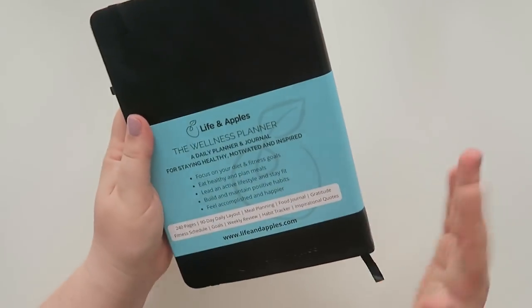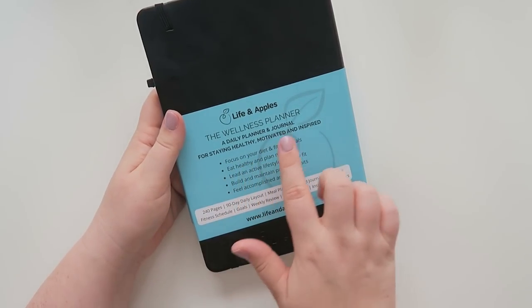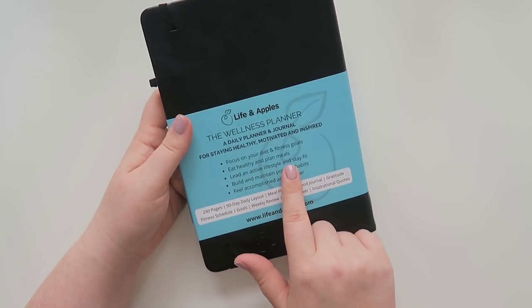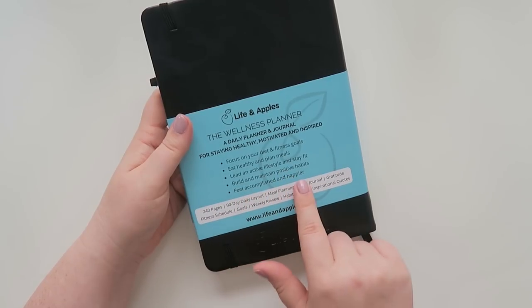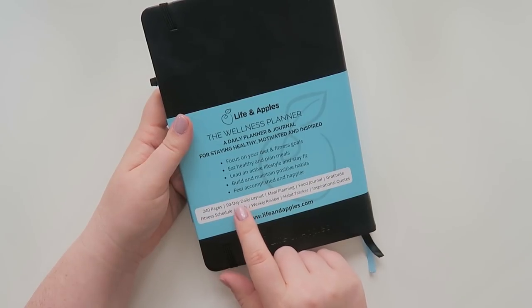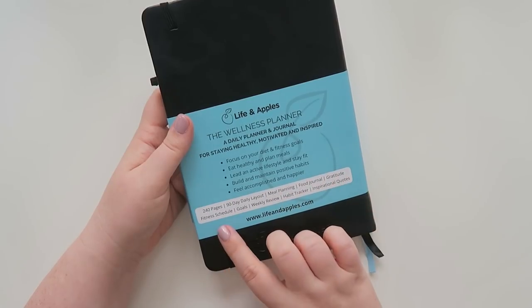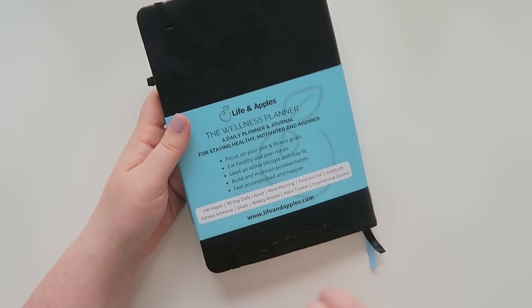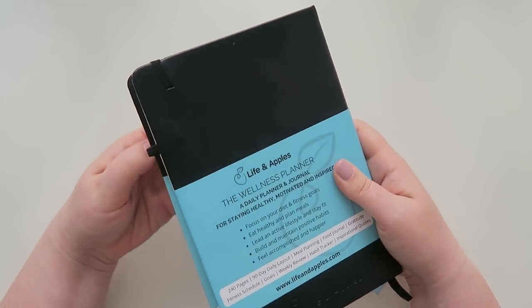And then there's some information on the back as well. So it says The Wellness Planner, a daily planner and journal for staying healthy, motivated, and inspired. It helps you focus on your diet and fitness goals, eat healthy and plan meals, lead an active lifestyle and stay fit, build and maintain positive habits, feel accomplished and happier. And then down here it has 240 pages. It's a 90-day layout, 90-day daily layout. There's meal planning, food journal, gratitude, fitness schedule, goals, weekly review, a habit tracker, and inspirational quotes. So their website is lifeandapples.com, but like I said, you can get it on Amazon as well.